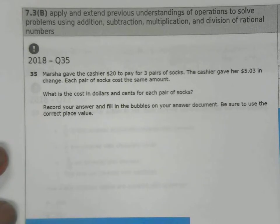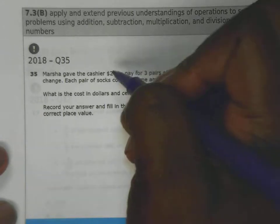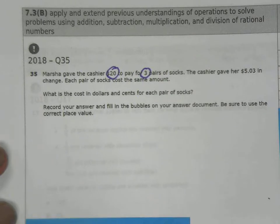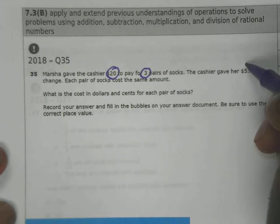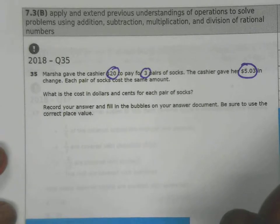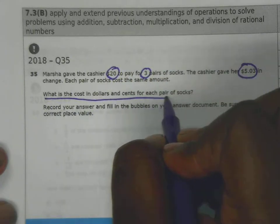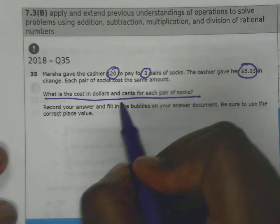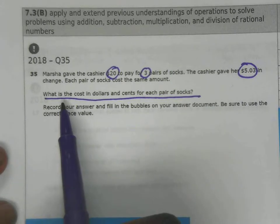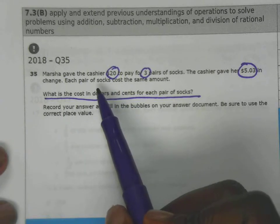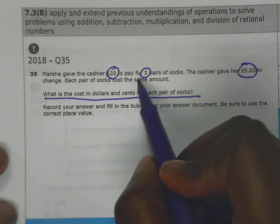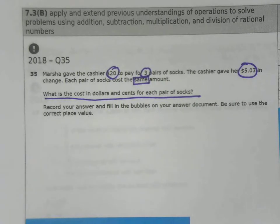This question was on last year's STAAR test, question 35. It says Marsha gave $20 to pay for three pairs of socks. The cashier gave her $5.03 in change. Each pair of socks costs the same amount. What is the cost in dollars and cents for each pair of socks? I'm going to circle my important numbers, underline my question, and box this part because it's important - each pair costs the same amount.